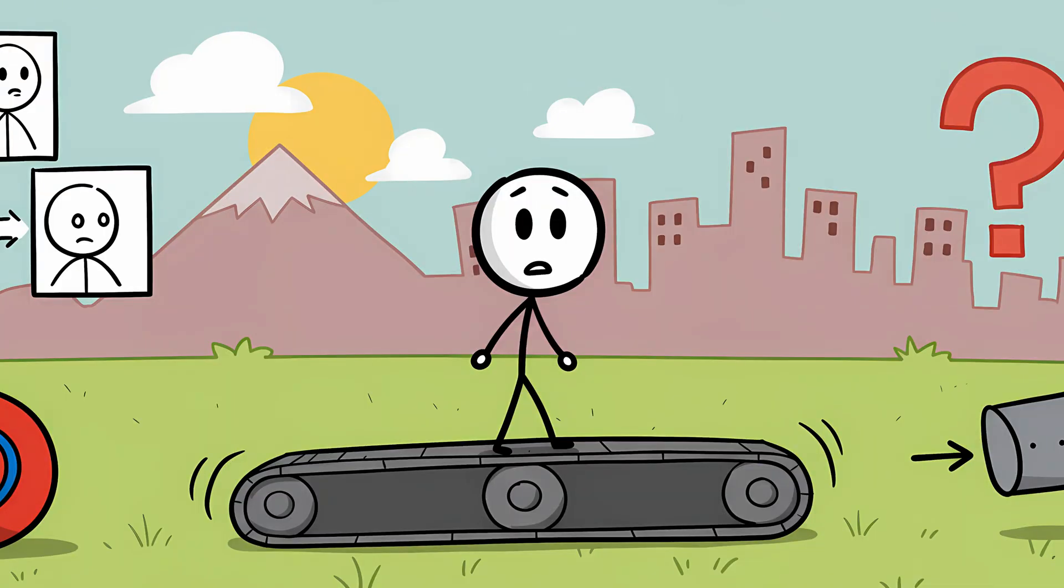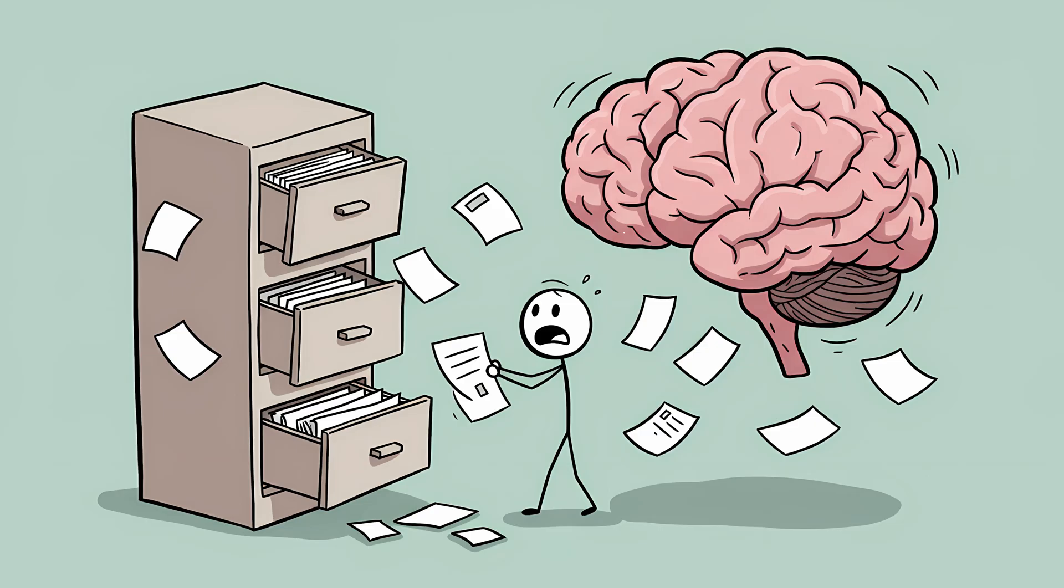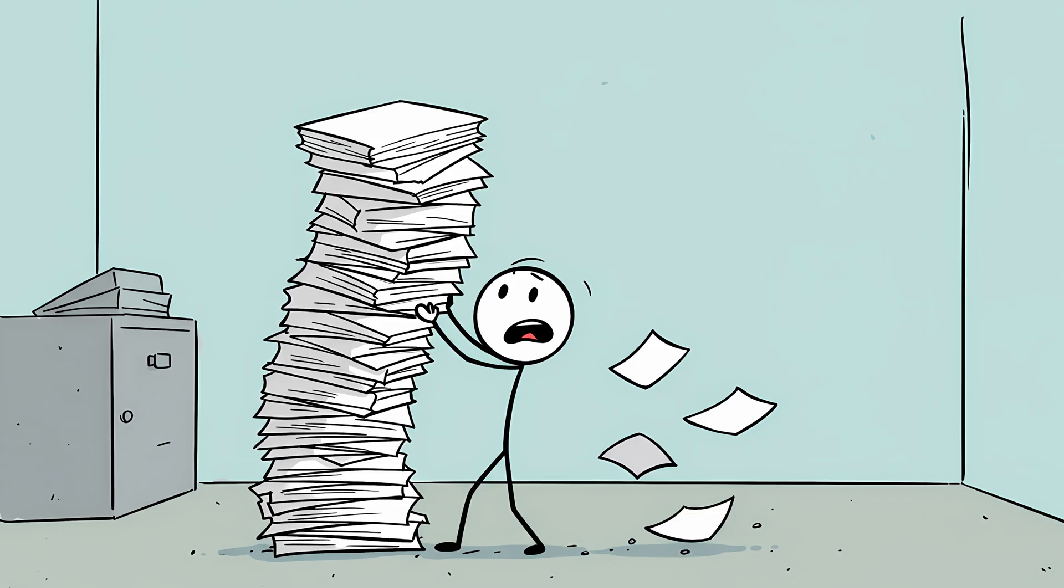You're going to new places, meeting new people, and encountering new situations constantly. With a higher volume of newness, there are simply more statistical opportunities for your brain's filing system to make a mistake. Your neural intern is swamped with an unprecedented amount of new paperwork, making it far more likely he'll drop a file or two.